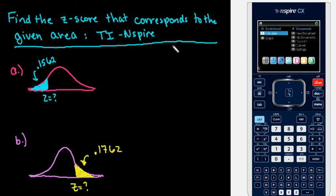Hi, for this video I'm going to show you how to find a z-score that corresponds to a given area under a normal curve using the TI Inspire.